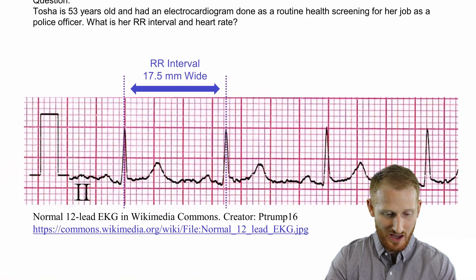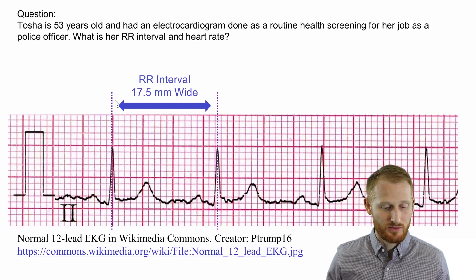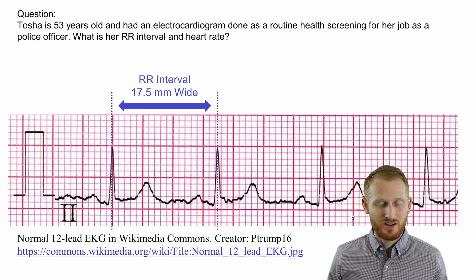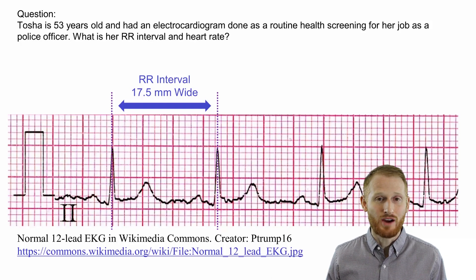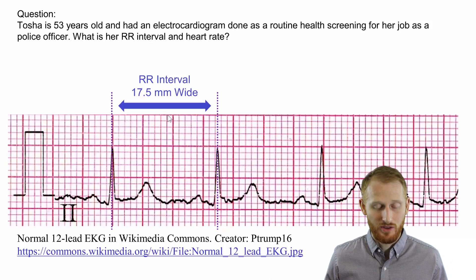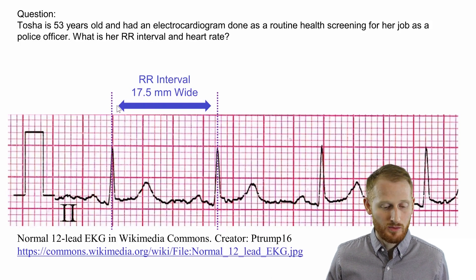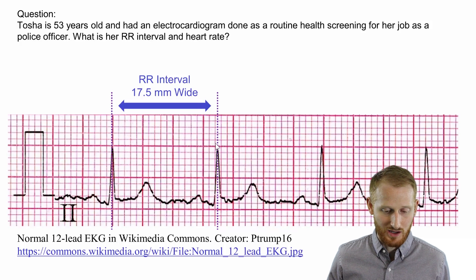Let's use this as an example ECG. We have an R-wave marked here by this dotted purple line, and another R-wave here, plus a couple more R-waves we could have used. To be most accurate, you would want to do this for multiple R-to-R intervals to get an average value, but let's just do it for one. The distance from this R-wave to this R-wave — counting these tiny red squares — gives us 17.5 millimeters, since each square is one millimeter.